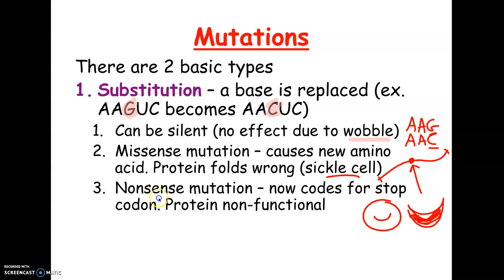A third possibility is a nonsense mutation. What if the code changes to a stop codon very early on in the sequence? That would mean the rest of the protein never gets made, because once it hits stop, that protein is going to break off. So maybe you don't make a protein at all.